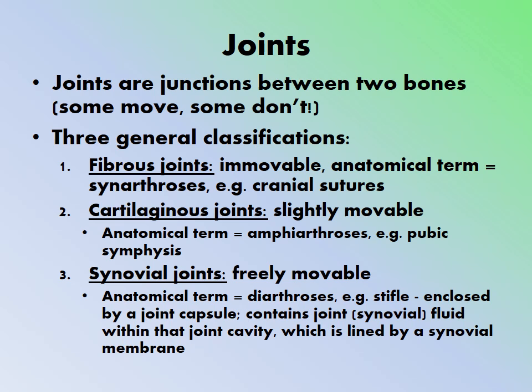Joints are the junctions between two bones. There are three classifications. Fibrous joints are immovable — the anatomical term is synarthrosis. Examples include the sutures of the skull. Cartilaginous joints are slightly movable — the anatomical term is amphiarthrosis. The pubic symphysis is an example; during childbirth the right and left pelvis can widen slightly thanks to this joint.